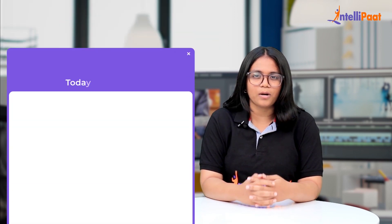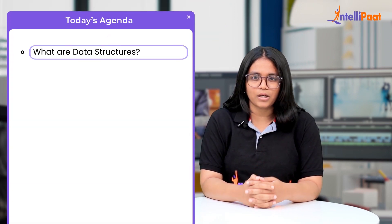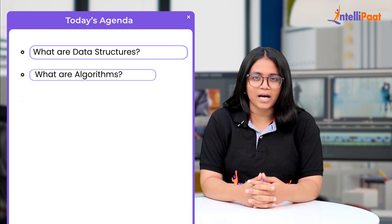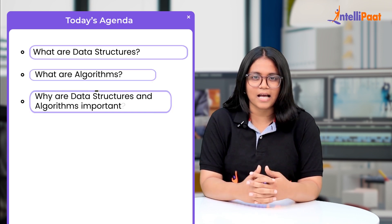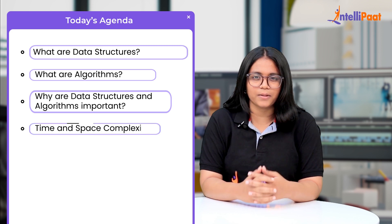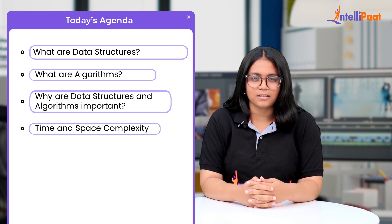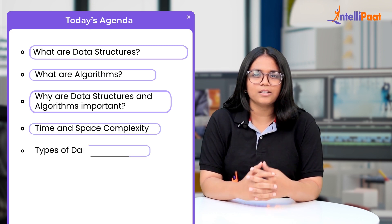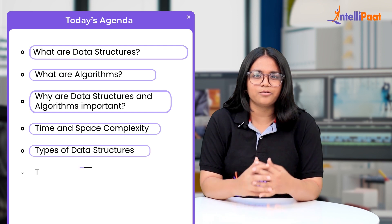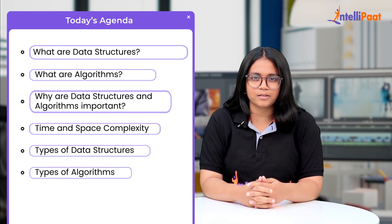Let us take a look at the agenda. First, we'll talk about what are data structures. Then, we'll look into what are algorithms. Then, we're going to discuss why data structures and algorithms are important. Then, we'll look into time and space complexity. Then, we'll look at the different types of data structures. Similarly, we'll look at the different types of algorithms. And with that, we'll conclude.